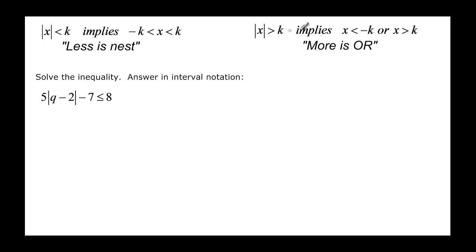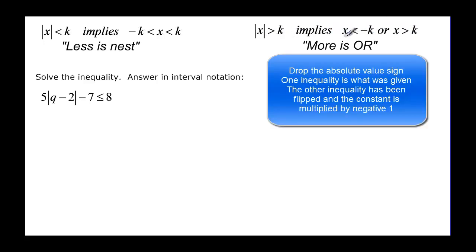If the absolute value of x is greater than k, notice the absolute value graph is all above the x-axis. If it's greater than some value k, we drop the absolute value and write x greater than k, and then we take x less than negative k — we have to flip the inequality. More is or.